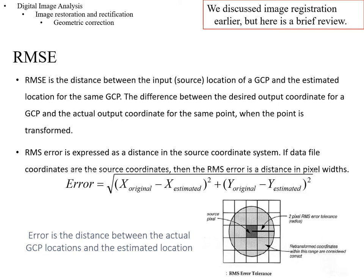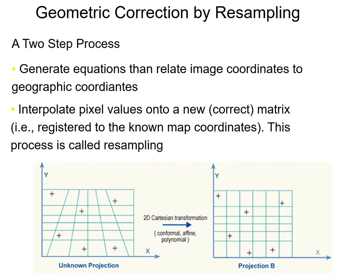In general, you would like to have a total root mean square error of less than one pixel to be doing a good job. For some applications like change detection, half a pixel is a better target, because you're looking at two images and each one has some error, and you're essentially adding the errors together when comparing the two images.